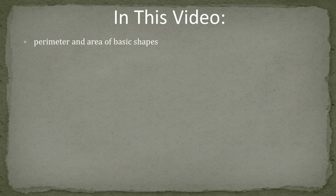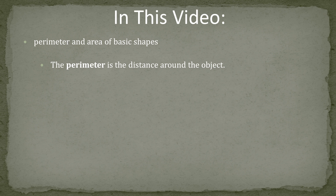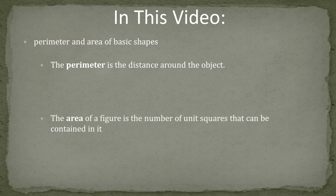There are four shapes we're going to look at today: the circle, the square, the rectangle, and the triangle. The perimeter is the distance around an object. We add up the distance around an object, or in the case of a circle, we call that the circumference, and there's a special formula for that. The area is the number of unit squares that are contained in the figure — how many one-by-one squares would fill that figure. That is the area.